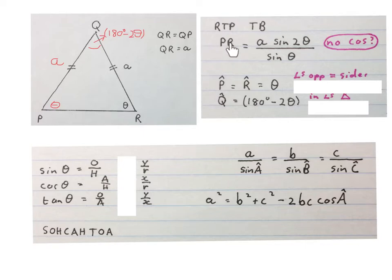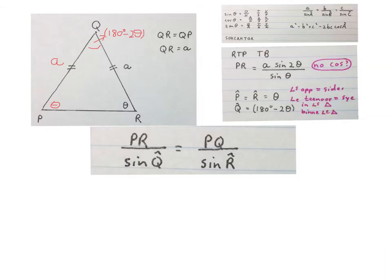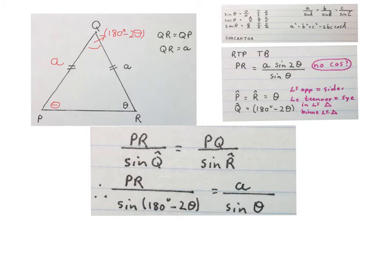So we want the length of PR. We write down the sine rule: PR over sine Q is equal to PQ over sine R. So this PR over sine of that angle is equal to PQ over sine of that angle. Fill in the values that we worked out. Sine Q will be sine 180 minus 2 theta that we worked out just now. The A we get from there and sine theta we get from there.